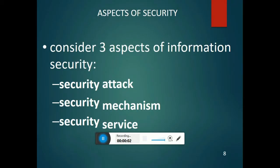Welcome to InfiniTutorials. The subject code is CS6701, Cryptography and Network Security, Unit 5. We are going to discuss the second part: aspects of security. This aspect of security comes under three things: security attack, security mechanism, and security service.